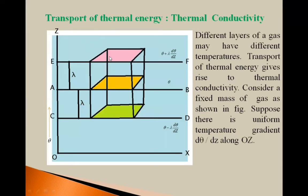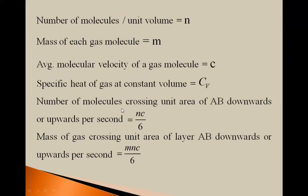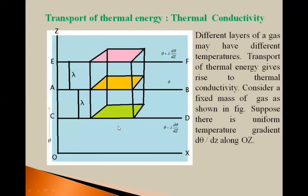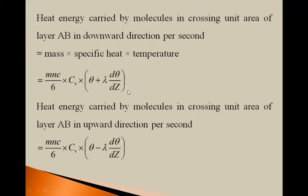Heat energy carried by molecules passing from layer EF to CD, crossing layer AB in the downward direction, is given by mass times specific heat times temperature: (mnc/6) × Cv × (θ + λ dθ/dz). Similarly, heat energy carried by molecules crossing from layer CD to EF in the upward direction is (mnc/6) × Cv × (θ − λ dθ/dz).